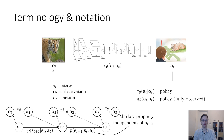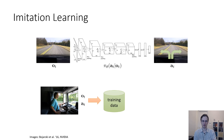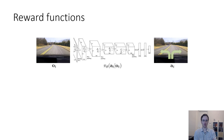In imitation learning, we saw that we could collect a data set — say, of humans driving a vehicle — consisting of observation-action tuples, and then use supervised learning algorithms to figure out how to train a policy to take actions that resemble those of the expert. In today's lecture, we'll introduce the formalism of reinforcement learning, which allows us to train these policies without having access to expert data. To do that, we need to define what it is that we want the policy to do, and we define the objective by means of something called a reward function.